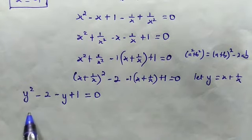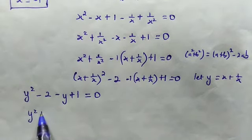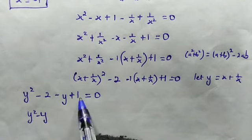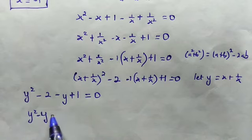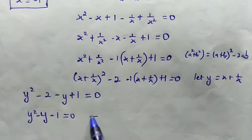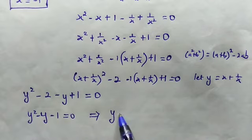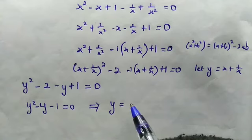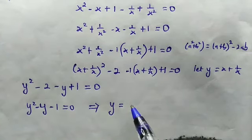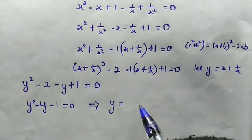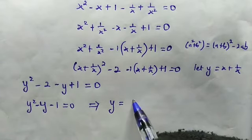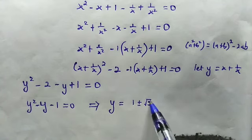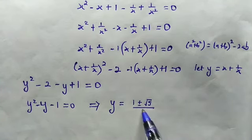Substituting, we get y squared minus 2, minus (y + 1) equals 0, which simplifies to y squared minus y minus 1 equals 0. Using the general quadratic formula, we get y equal to 1 plus or minus the square root of 5, all over 2.